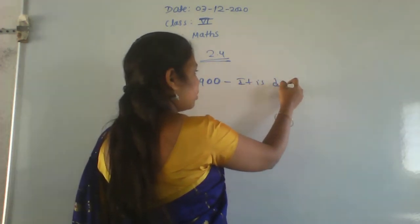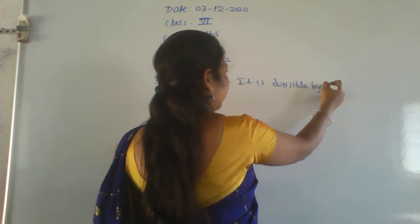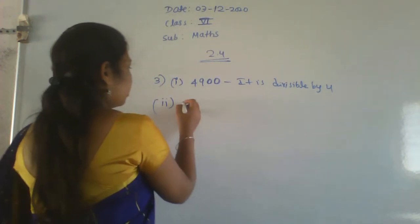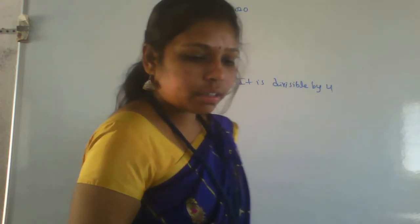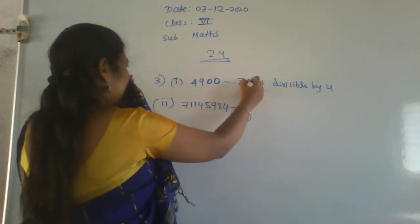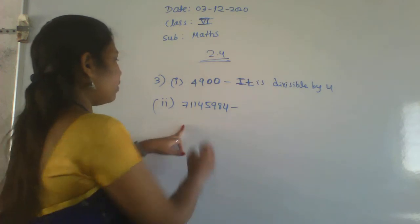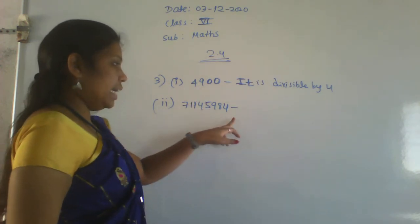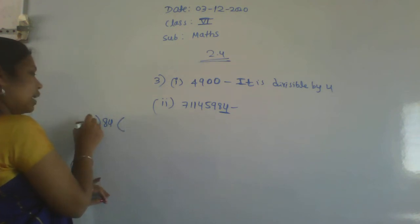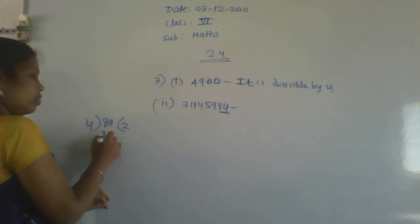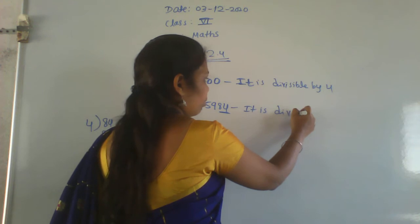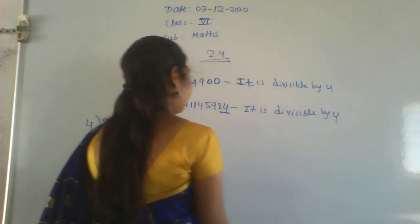Second number: 711459 84. The last 2 digits are 84. Divide 84 by 4: 4×21=84, so it divides exactly. Therefore it is divisible by 4.